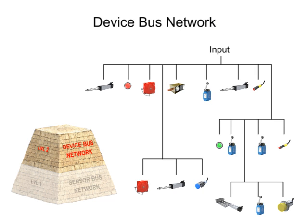The next increasingly complex level of industrial fieldbus networking is the devicebus network. The devicebus network is similar in function to the sensorbus network, but works on a larger scale, connecting many sensors and actuators together. The devicebus network also connects equipment to variable speed drives and motor control centers that allow for control of individual elements in the network.